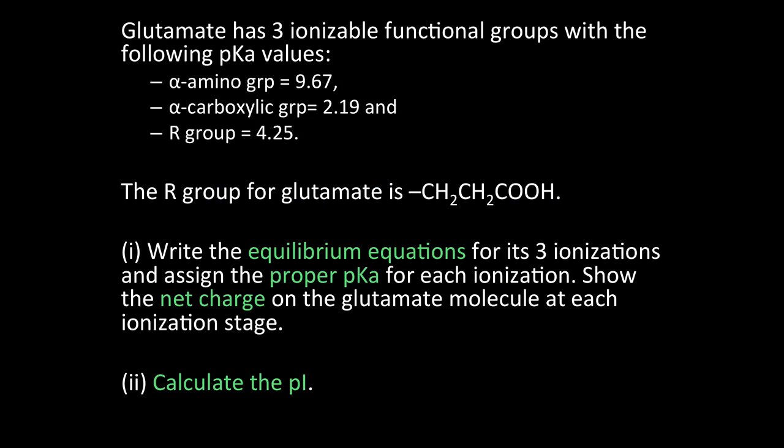The question was set up like this: glutamate has three ionizable functional groups with the following pKa values - the alpha amino group equals 9.67, the pKa value for the alpha carboxyl group is 2.19, and the pKa value for the R group is 4.25. In this question they also give you what the R group is, which is CH2CH2COOH.